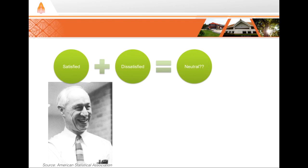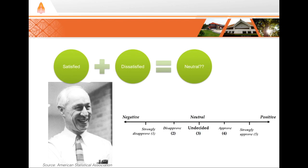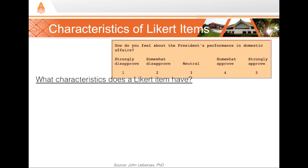Likert's original question format used a series of questions with five response alternatives: strongly disapprove, disapprove, undecided, approve, and strongly approve. By assigning numerical codes one through five, we could more easily perform quantitative analysis of attitudinal results. And thus the Likert item was born.